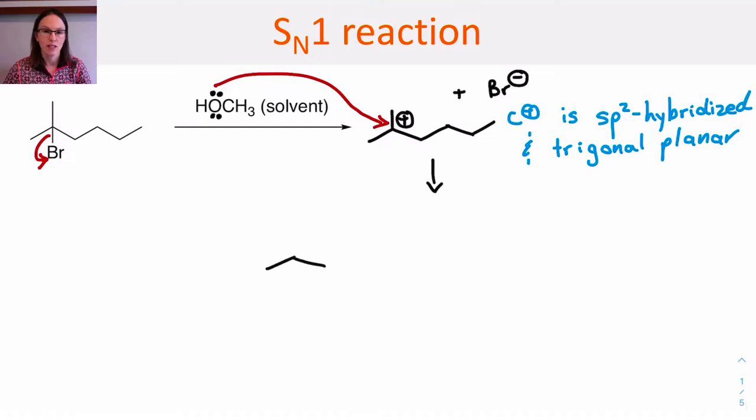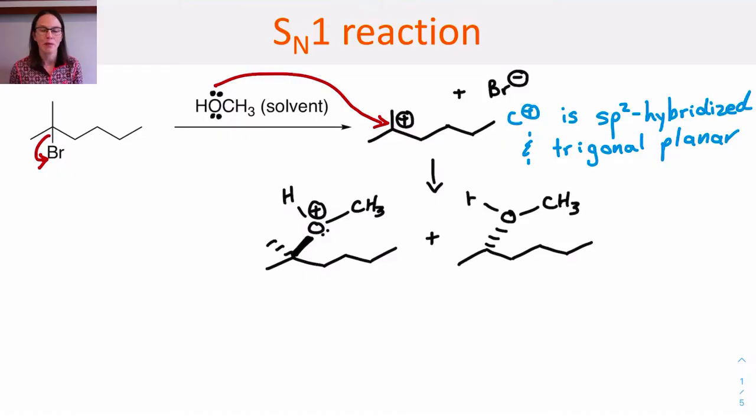The solvent also acts as a nucleophile in the reaction. So the nucleophile can enter from either top or bottom of that carbocation intermediate, or left or right, depending on how we've drawn that carbocation intermediate, giving rise to two different possible reaction products.